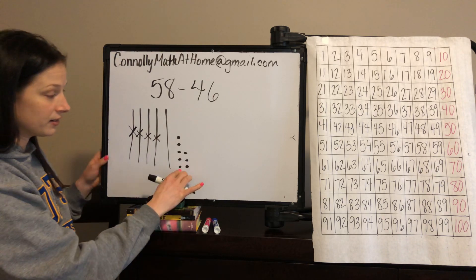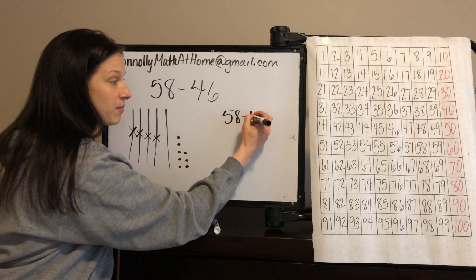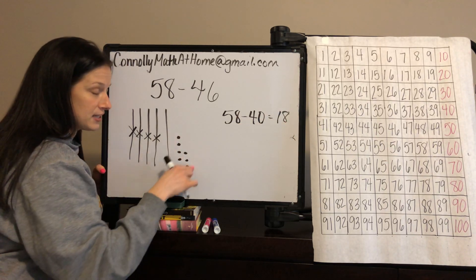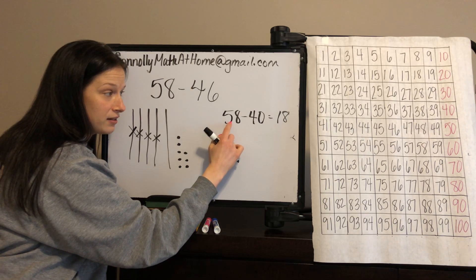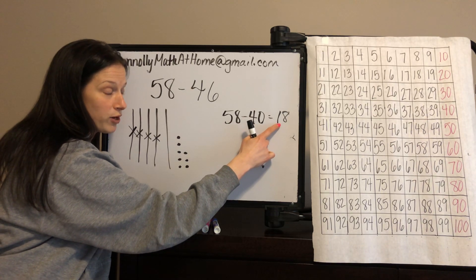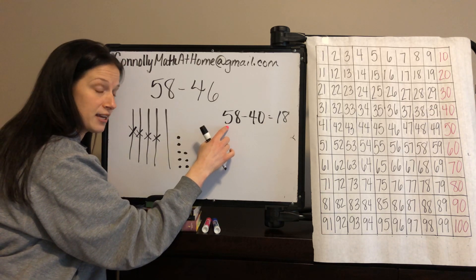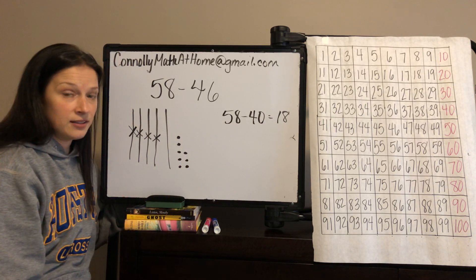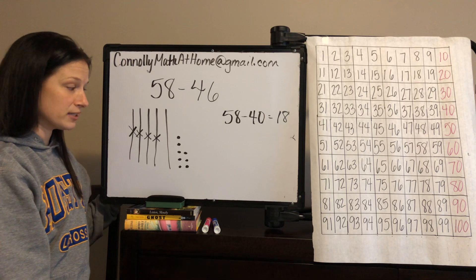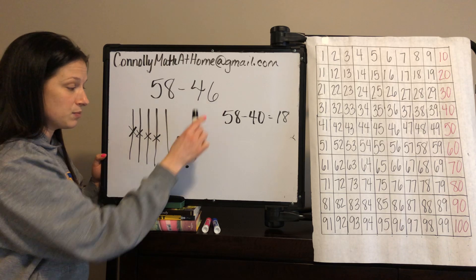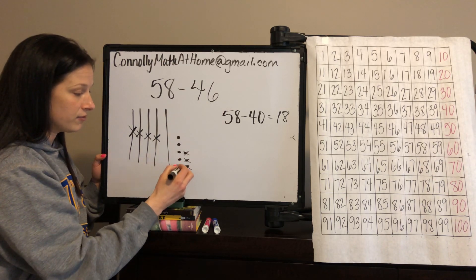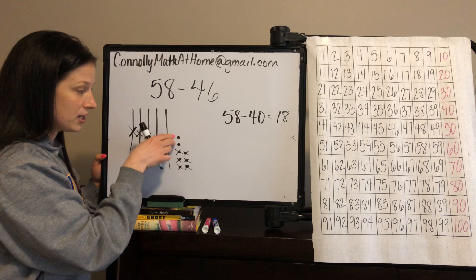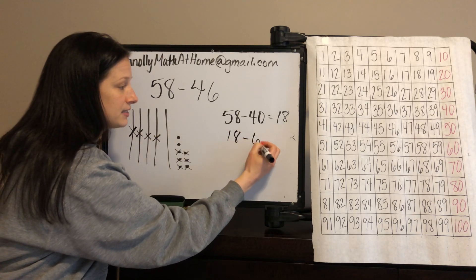What happened over here? Nothing changed. 58 minus 40 — the ones place did not change. The eight singles stayed there. The tens place did change: we had five groups of 10, subtracted four groups of 10, and we're left with one group of 10. Then we subtract the ones. I've subtracted 40 so far; I need to subtract six more — 1, 2, 3, 4, 5, 6. I'm left with one group of 10 and two singles, so 58 minus 46 equals 12.